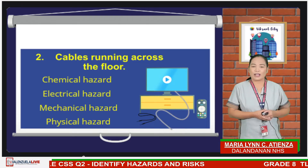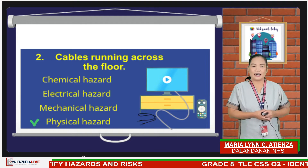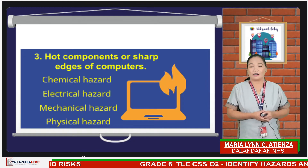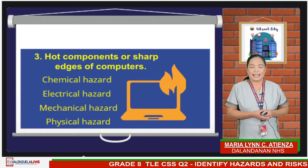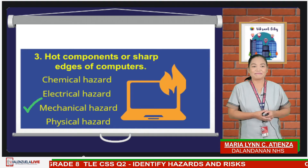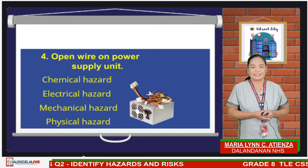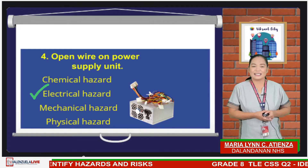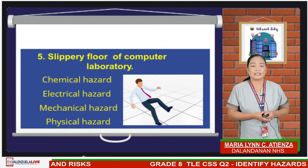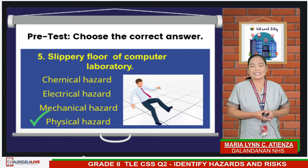Number 2: cables running across the floor. The answer is physical hazard. For number 3: sharp-edged tools or parts of the computer. The answer is mechanical hazard. And number 4: open wires on the computer supply unit. The answer is electrical hazard. For the last item, number 5: slippery computer laboratory floor. The answer is physical hazard.